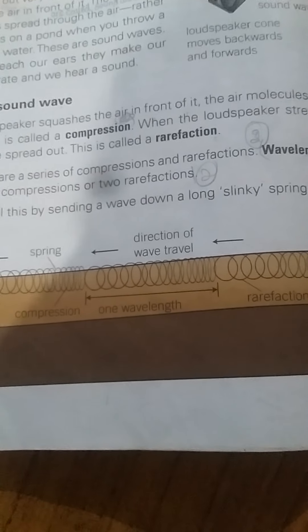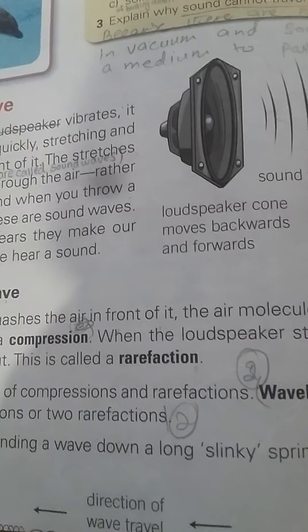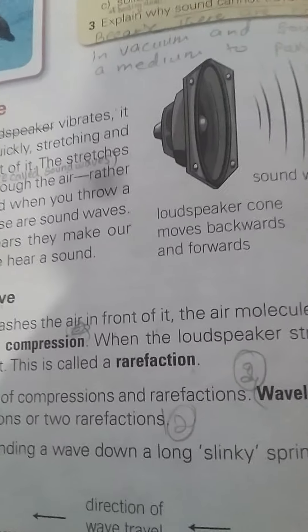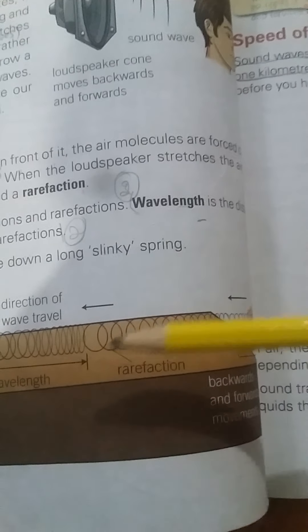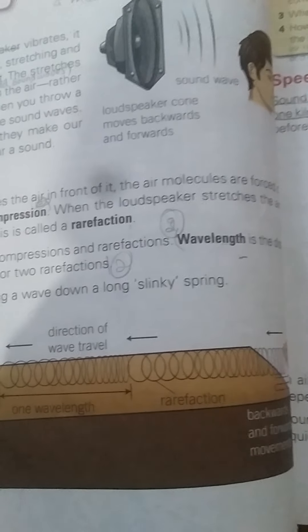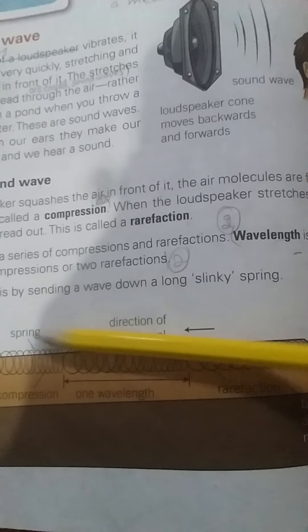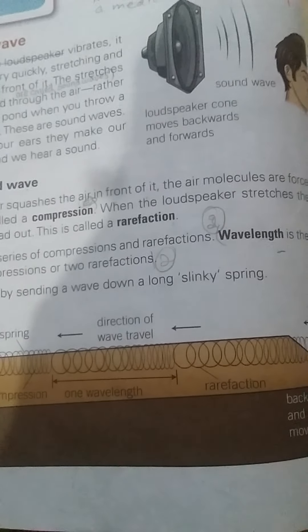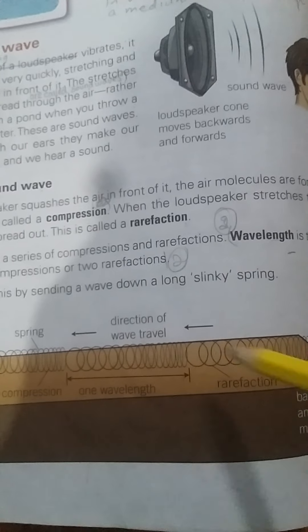Sound waves are an example of oscillation. Oscillation is a regular backward and forward movement, or upward and downward movement. If you attach a mass on a spring, it will oscillate forward and backward. It's like a child's swing — pushed once and released, it continues to move in a repeating pattern, producing compressions and rarefactions with a wavelength.